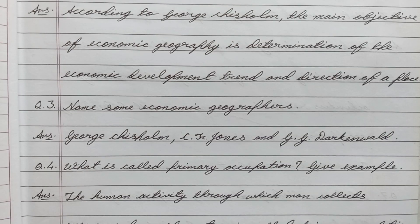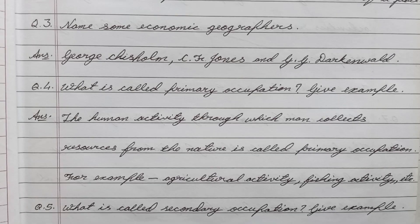Question number three: Name some economic geographers. Answer: George Chisholm, C. F. Jones, and Darkenwald.